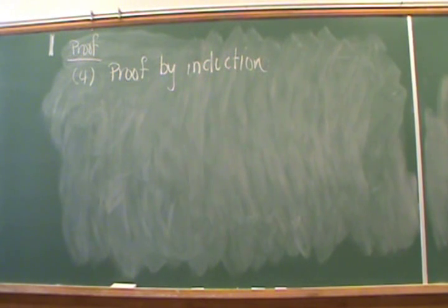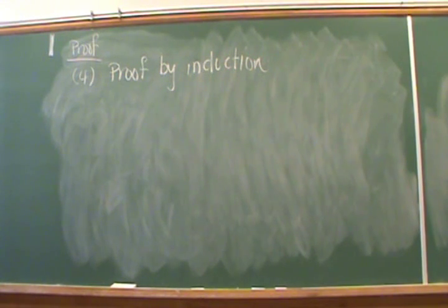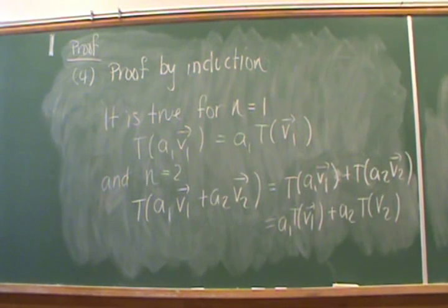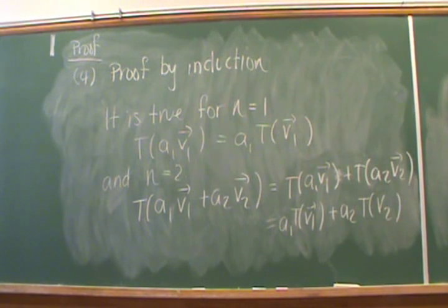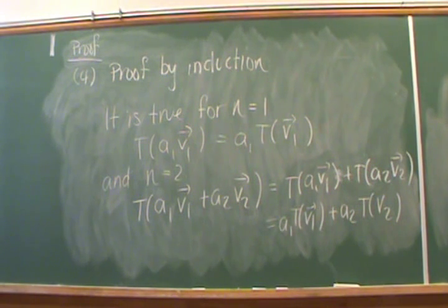For property four we are going to do a proof by induction. If you need to read up on induction, refer to the proof list given at the beginning of the course. The base case for n equals one: we just factor out the scalar a1, which we can do because T is a linear transformation. It also works for n equals two: given a1v1 plus a2v2, we break apart the addition first, then factor out a1 and a2 — both steps valid because T is a linear transformation.